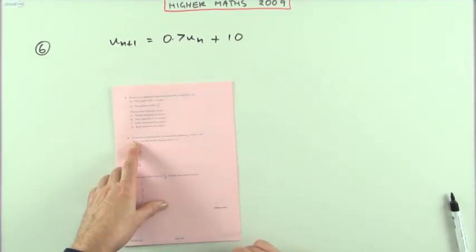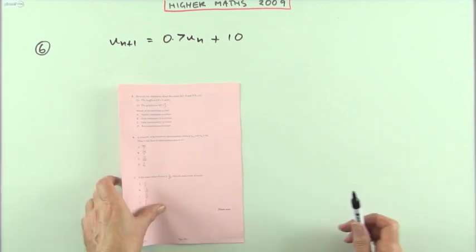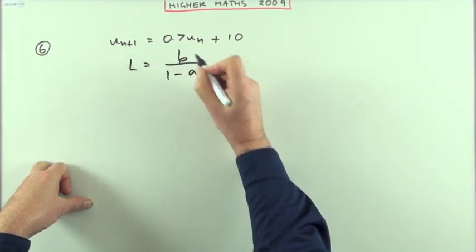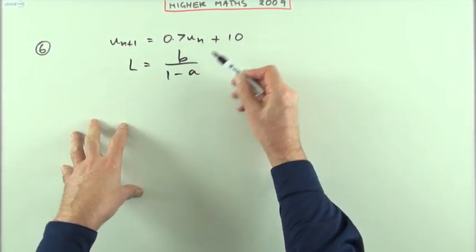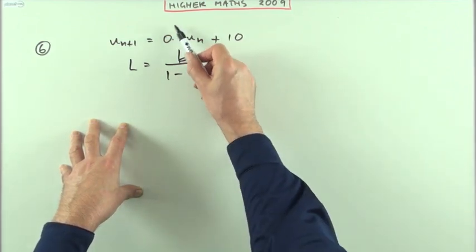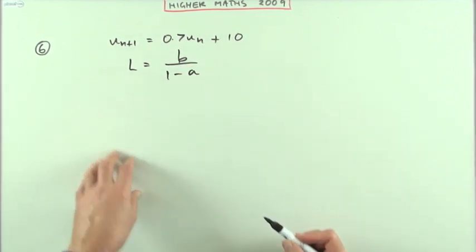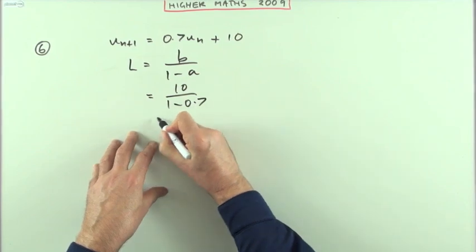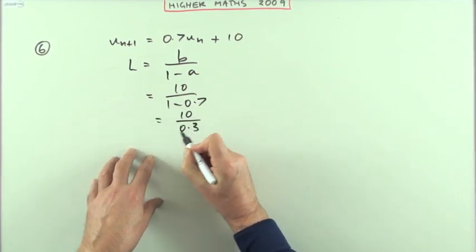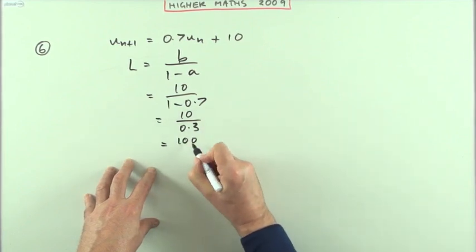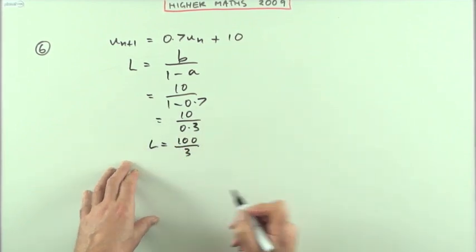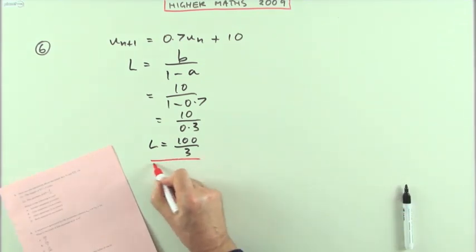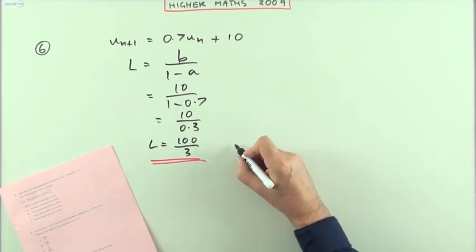Number 6 then. Another recurrence relation, only this time, what's the sum to infinity? Well, you could put down the formula L = b/(1 - a), if you remember it, where b is the number added and a is the multiplying number, which would have to be a proper fraction between 1 and negative 1 for it to have a limit. Then you just pop in the numbers. B was 10, A was 0.7. So you've got 10 over 0.3. Multiply top and bottom by 10, and you've got 100 over 3. So that would be A.